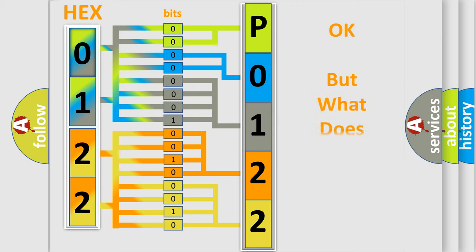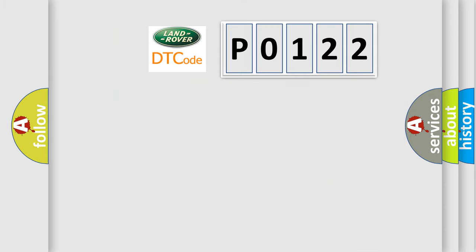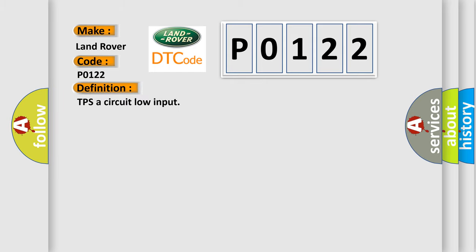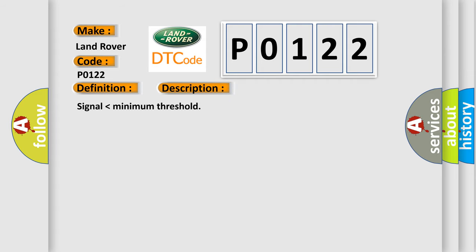The number itself does not make sense to us if we cannot assign information about what it actually expresses. So, what does the Diagnostic Trouble Code P0122 interpret specifically for Land Rover car manufacturers? The basic definition is TPS or throttle position sensor circuit low input. The short description of this DTC code is: signal lower than minimum threshold.